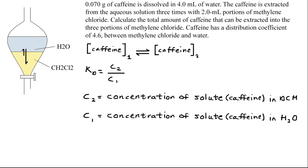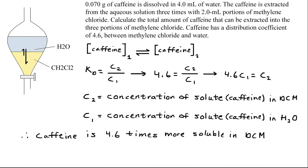Doing very little math, we can substitute in that value and get that 4.6 is equal to C₂ over C₁. Cross-multiplying, we get 4.6 times C₁ is equal to C₂. This means that caffeine is 4.6 times more soluble in methylene chloride than it is in water, which proves that caffeine is going to go into the methylene chloride layer.